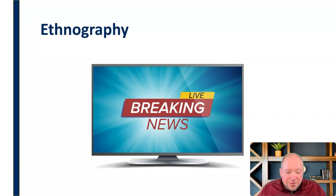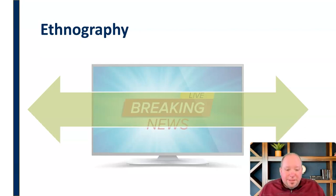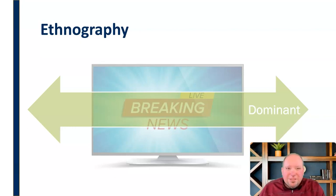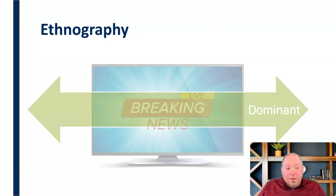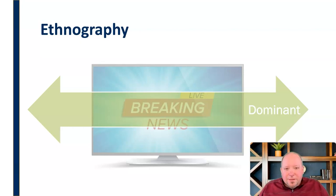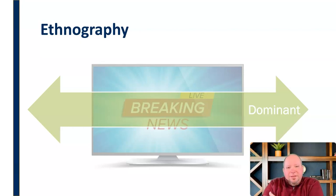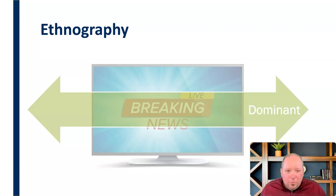One of the more famous examples of ethnography came from David Morley and what was called his Nationwide Study. Nationwide was a news program in the UK. David Morley embedded himself in a community and examined the impact of this program. His conclusion was that there are three kinds of responses that people are essentially going to have and they're going to fall somewhere on a spectrum. The dominant perspective is one that matches the intended or preferred meaning of the creator. I know people on both sides — Fox News watchers and MSNBC watchers — who just take whatever is said there as gospel. Their understanding matches the intended meaning of that outlet.